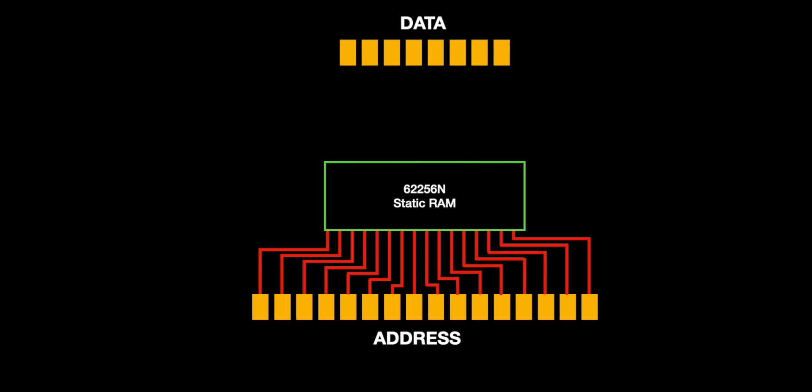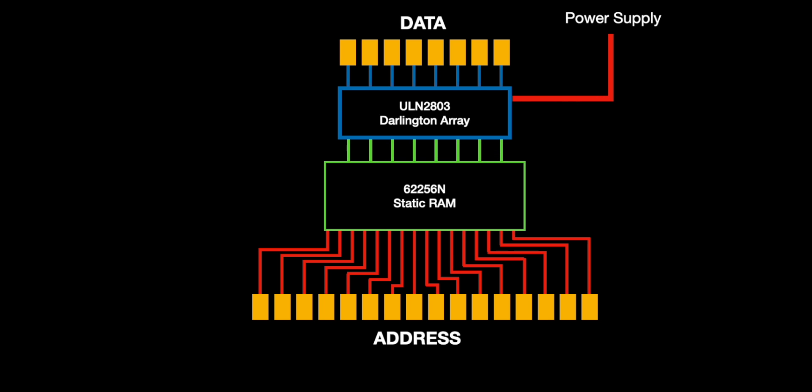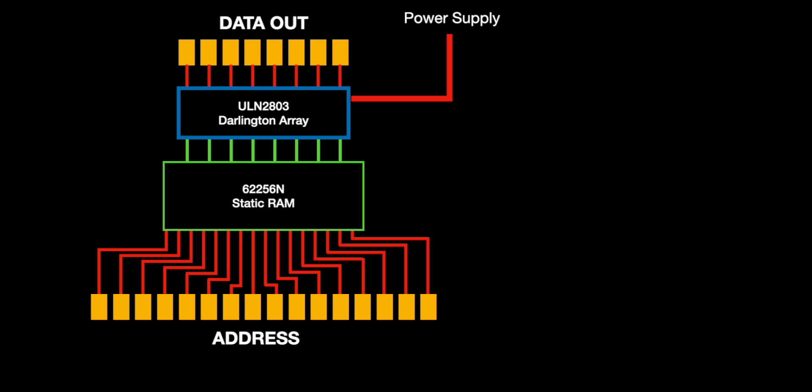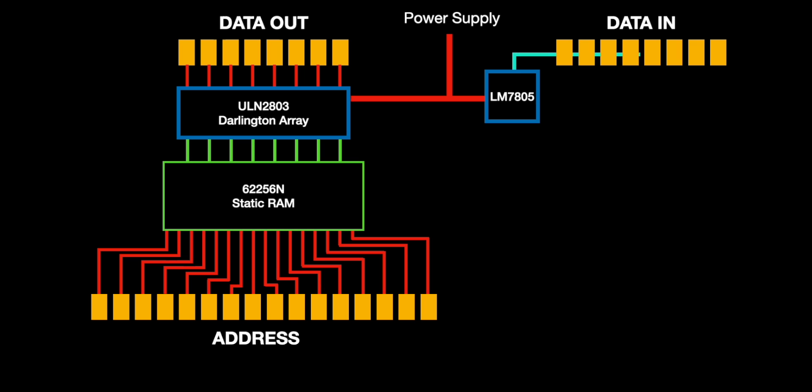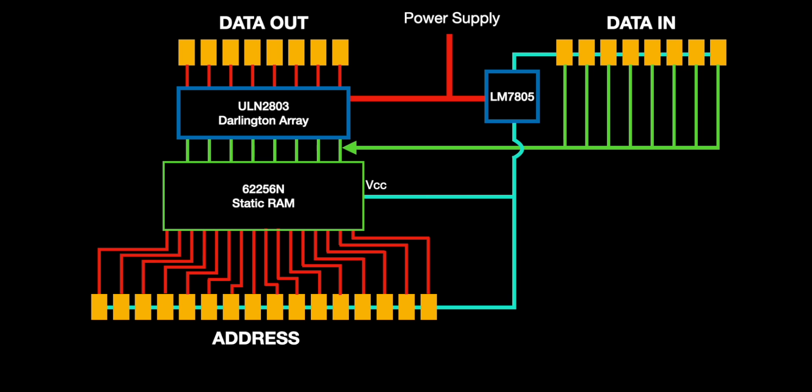To solve this we can introduce an eight line Darlington array and this will isolate the memory chip from the common power supply voltage. But this array only works in one direction so this method will be used for data output only. Now we can tackle getting the data and addresses into the memory chip. So we'll use a 5 volt regulator and a new set of data input relays that will ensure that the memory data IO inputs are never greater than 5 volts at any time. And when we do the same for the address bus, our sensitive memory chip will now be safely power isolated and can still function with the relay computer.